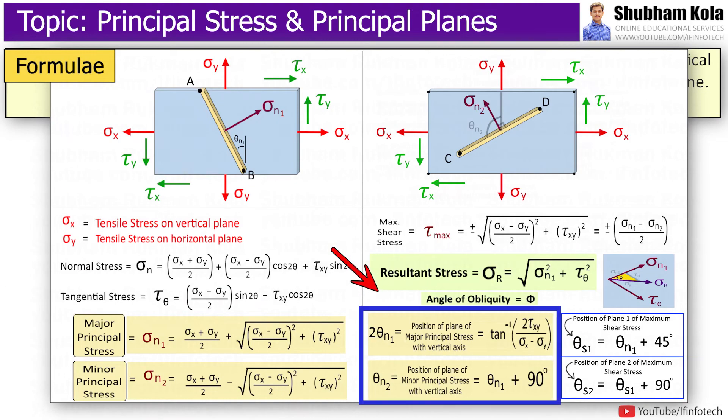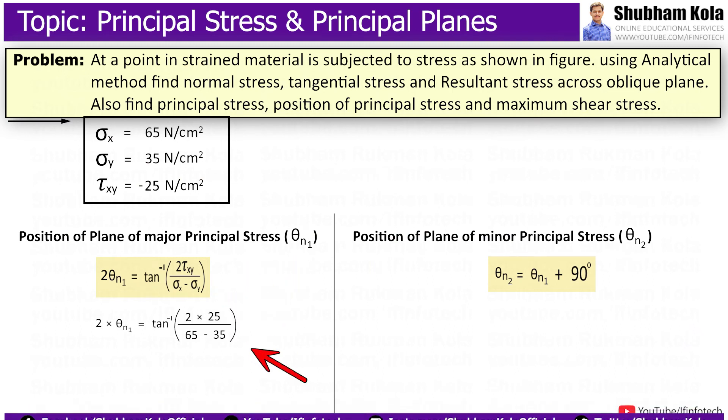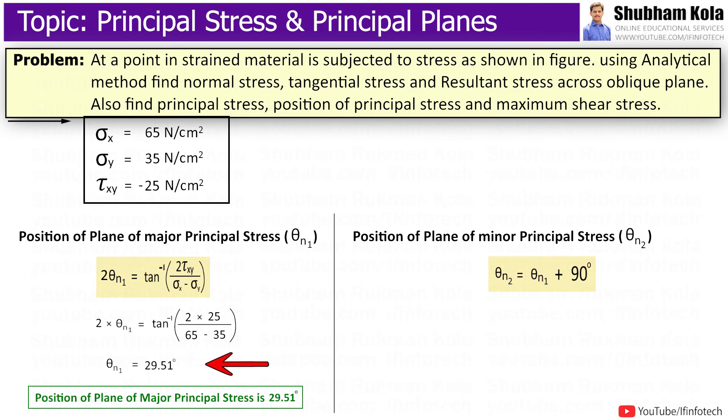Now, to calculate positions of plane of major principal stress, i.e. theta n1, I will use this formula, and I will calculate theta n1 as 29.51 degrees. And theta n2 is equal to theta n1 plus 90 degrees. So, I will get position of plane of minor principal stress, i.e. theta n2 will be 119.51 degrees.